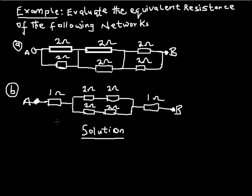It's just for you to locate the series or parallel connection in a particular network. The question we have here says: evaluate the equivalent resistance of the following networks. So I have this network, and I'm evaluating the equivalent resistance — the total resistance between points A and B. That means if I'm asked to find the equivalent resistance of all these resistors, I'm looking for one single resistor that will have the same effect and value as all of them combined.